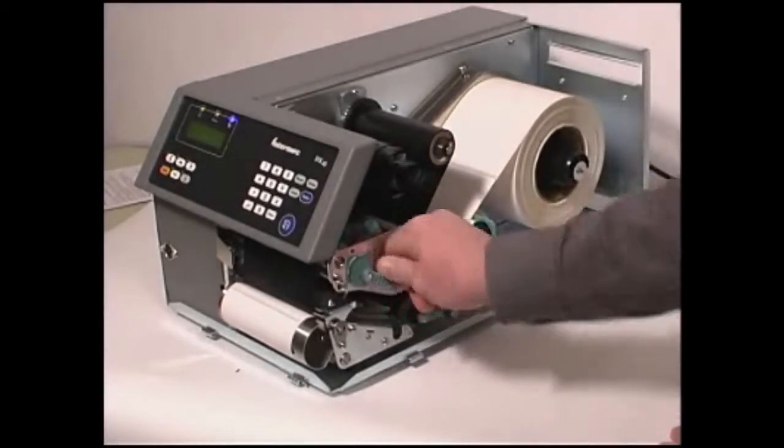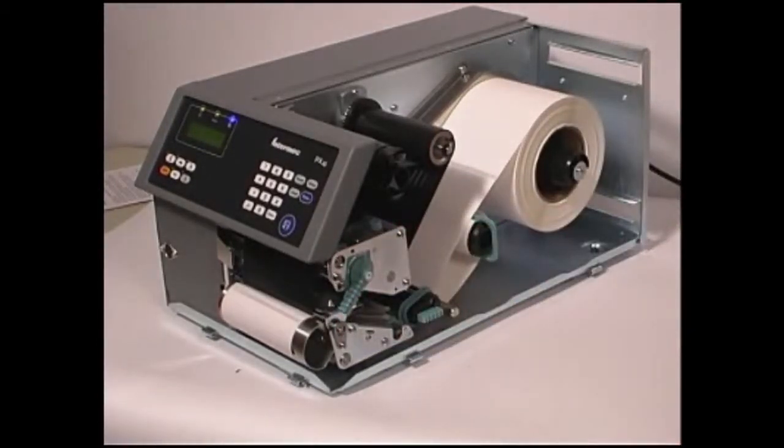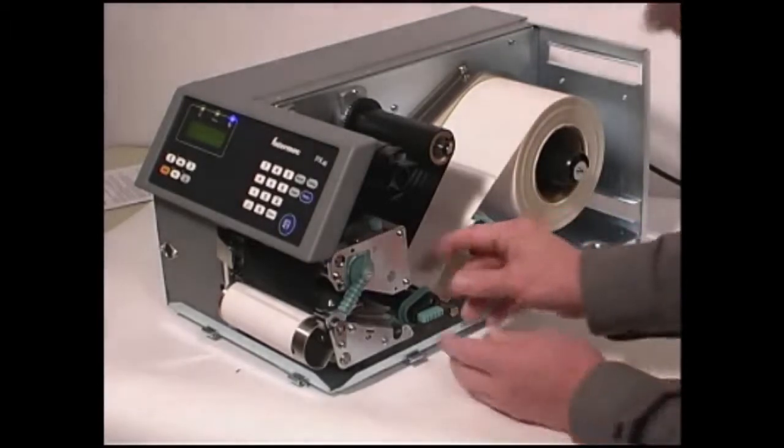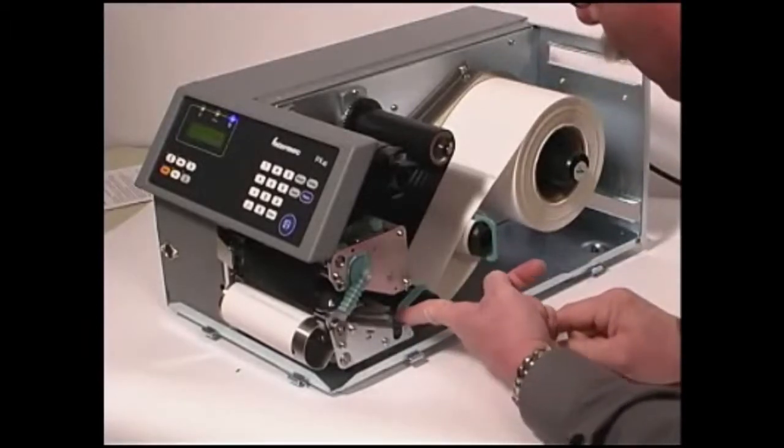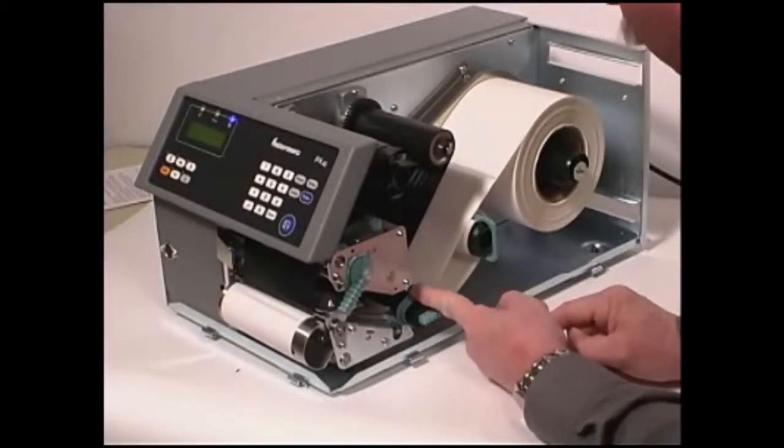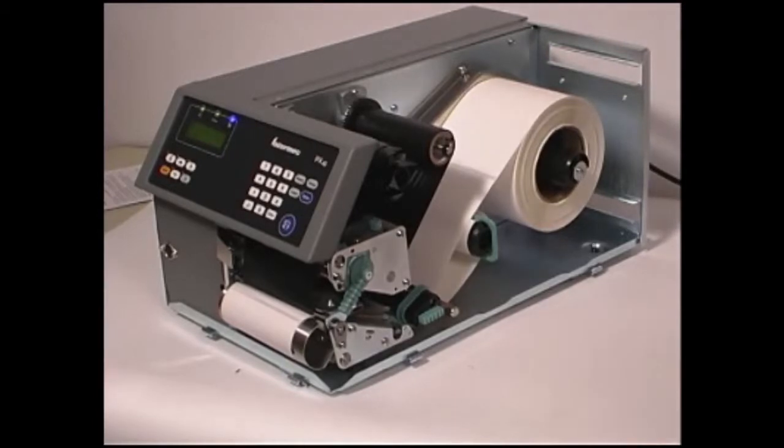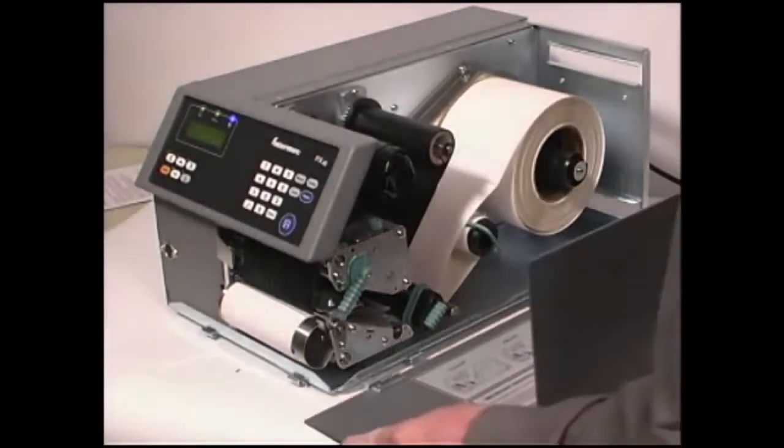Lower the printhead by turning the printhead lift lever clockwise. Adjust the position of the green edge guides so that the media is guided with a minimum of play. Close the media cover.